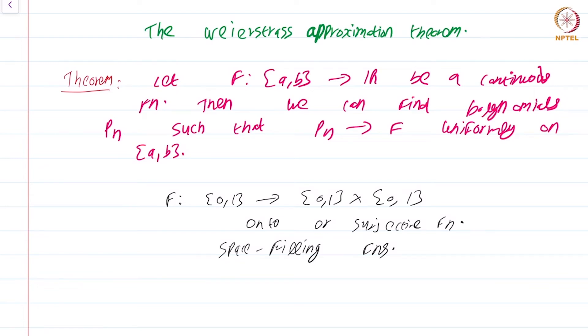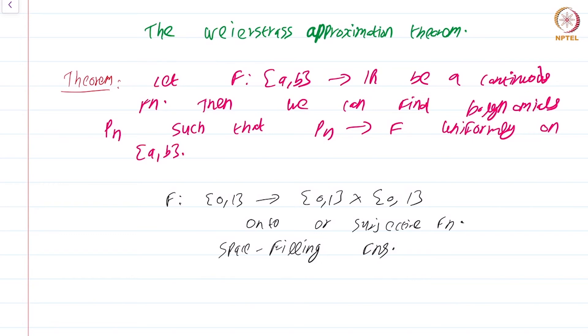Now, how are we going to prove this theorem? There are several proofs. In Real Analysis 2, I will prove the Stone-Weierstrass theorem, which gives a very general version of the Weierstrass approximation theorem, but that is for a future course, so I will not talk about it much.